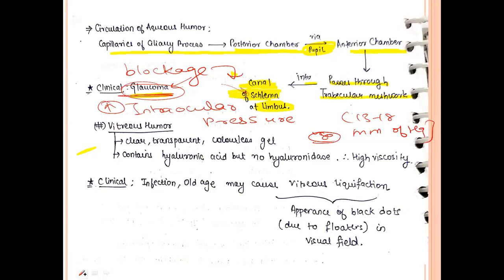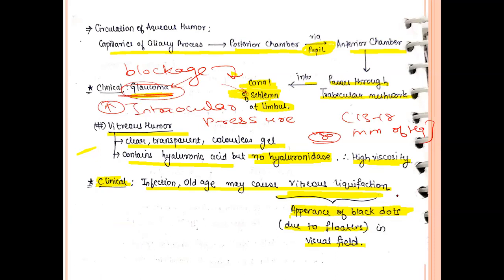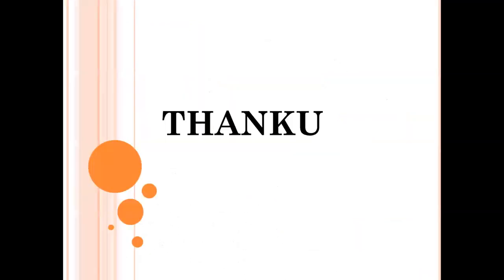Vitreous humor is a clear, transparent, colorless gel that contains hyaluronic acid but no hyaluronidase enzyme, making it viscous. Clinically, infection in the vitreous humor or old age may cause vitreous liquefaction and the appearance of black dots in the visual field due to floaters. That concludes this video — the retina is covered in a separate video. Please like, share, and subscribe to the channel.